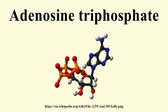Substrate level phosphorylation, oxidative phosphorylation in cellular respiration, and photophosphorylation in photosynthesis are three major mechanisms of ATP biosynthesis. Metabolic processes that use ATP as an energy source convert it back into its precursors.